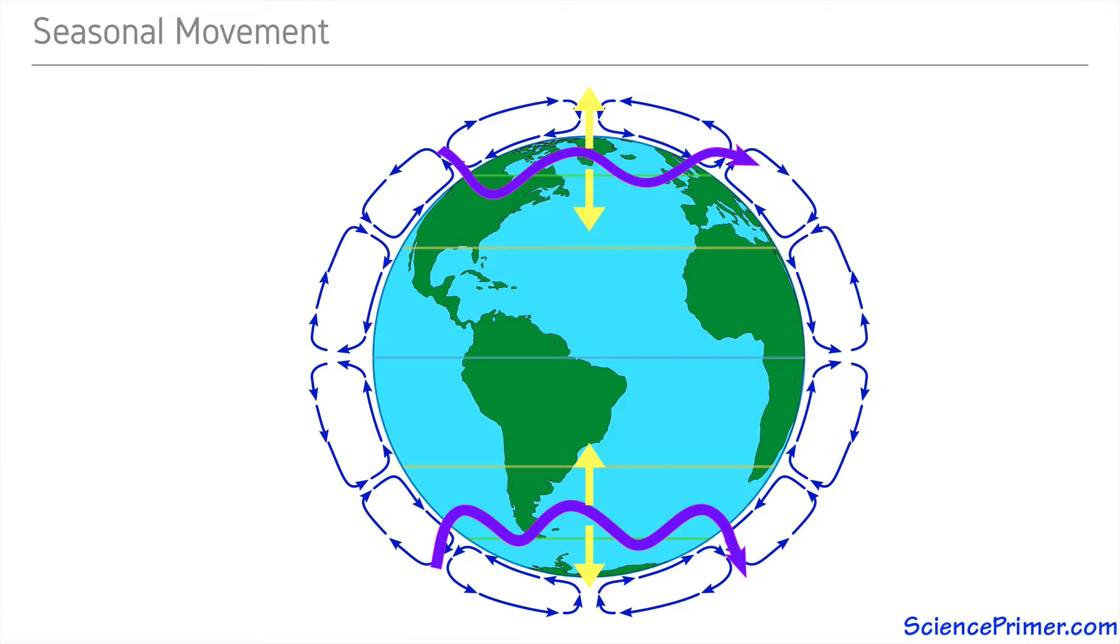In addition to the polar jets, there are jet streams where the Hadley and Ferrel cells meet. These are the subtropical jets.